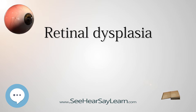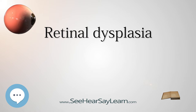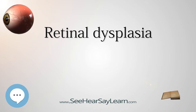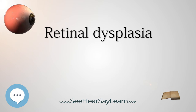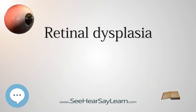Geographic retinal dysplasia appears as an irregular or horseshoe-shaped area of mixed hyper- or hyporeflectivity in the central retina. Retinal detachment occurs with complete retinal dysplasia and is accompanied by blindness in that eye. Cataracts or glaucoma can also occur secondary to retinal dysplasia. Other causes in dogs include infection with canine adenovirus or canine herpesvirus, or radiation of the eye in newborns.